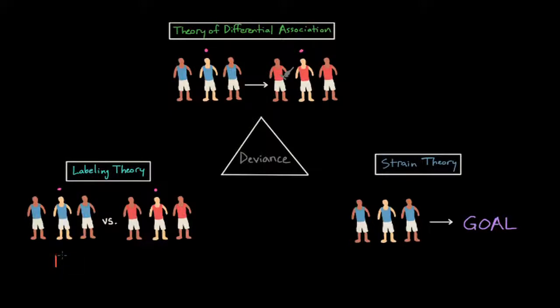An act labeled as primary deviance does not have huge consequences. This act produces very little societal pushback. The reaction to the deviant behavior is very mild and doesn't affect the person's self-esteem. The individual is able to continue to behave in the same way without feeling immoral or wrong.